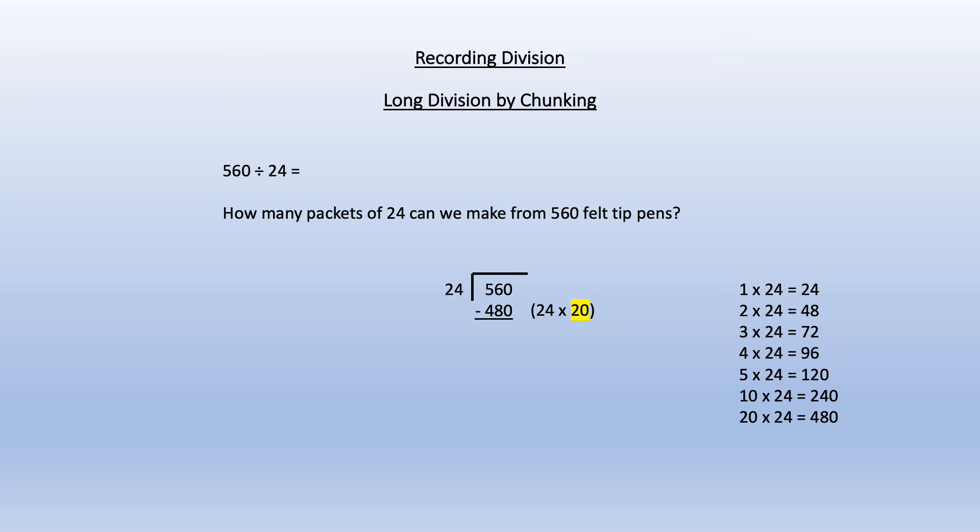We multiply 24 by 20 to arrive at the first chunk that we can subtract from 560 so we take 480 off 560 that leaves us with 80. We then ask how many 24's going to 80 which we can see from our multiples is 72. Taking this away from 80 leaves 8 giving the answer of 23 remainder 8.